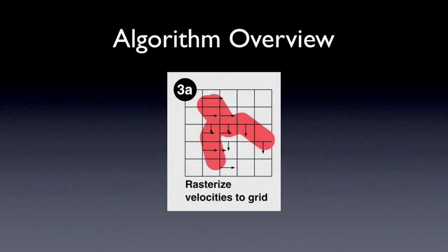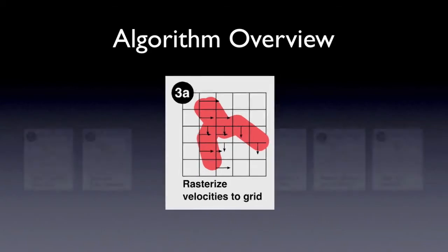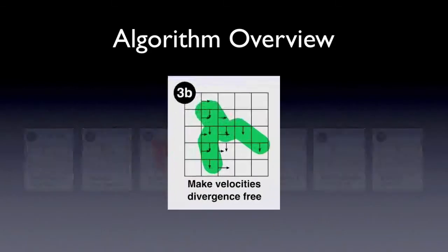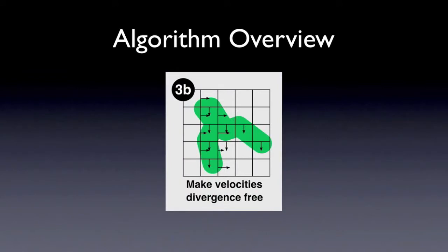Third, we rasterize the resulting velocities to an Eulerian grid for the consideration of bulk collision behavior. Any divergence on this grid is projected out by solving a Poisson equation.